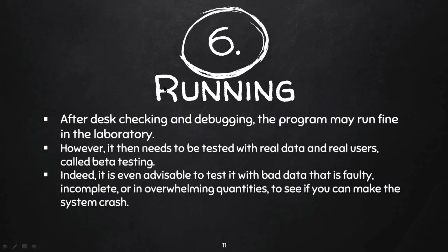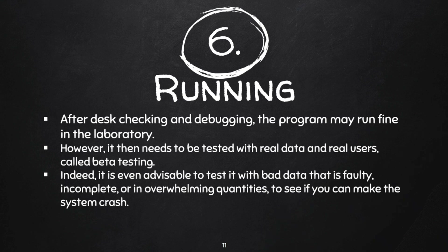After checking and debugging, we run the program. The program may run fine in the laboratory after checking all things, however it needs to be tested with real data and real users — called beta testing. For example, in the Google Play Store you may have seen applications labeled 'beta' when they are published. First they allow a few users to use it and provide feedback on whether the application is working properly. Based on user feedback, changes are made — that is beta testing.